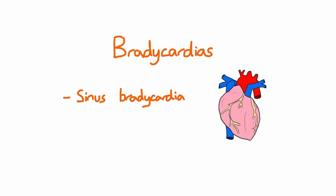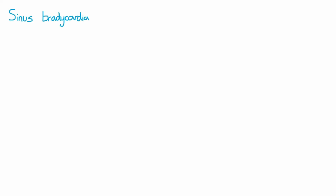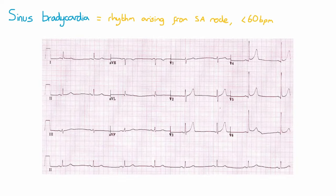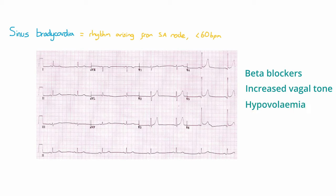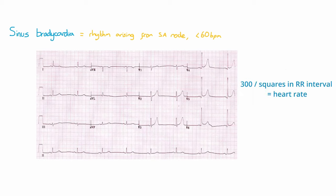Next are our bradycardias, where the heart rate is less than 60 beats per minute. First is sinus bradycardia, which is a slow heart rate with normal rhythm arising from the SA node. There are many possible causes for this, including medications such as beta blockers, increased vagal tone as seen in athletes, or it could be a late sign of haemorrhage. Notice here that there's an increased RR interval. If you use the equation 300 divided by the number of large squares between the RR interval, you'll get a rate of less than 50 beats per minute.